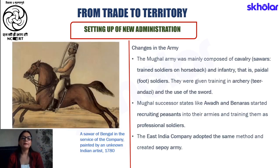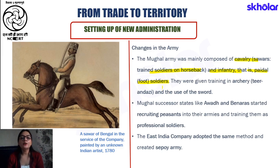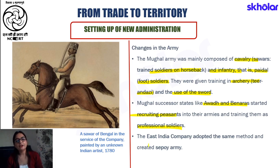Apart from administration, significant changes were also made to the army in our country. The Mughal army mainly comprised two types of soldiers: cavalry soldiers on horseback, and infantry soldiers also known as Paidal or foot soldiers. During Mughal times, soldiers were trained in archery (tirandazi) and the use of the sword (talwar). After the decline of the Mughal Empire and the rise of successor states such as Awadh and Banaras, an important change of recruiting peasants and training them as professional soldiers began. The English East India Company adopted a similar policy, creating their own Sepoy army — by Sepoy meaning soldier.